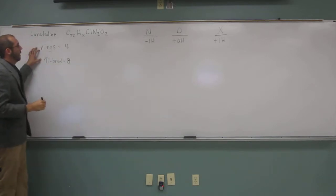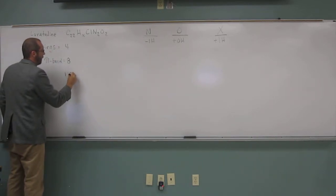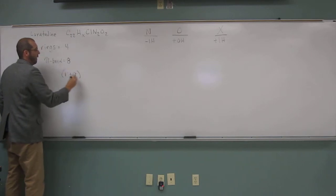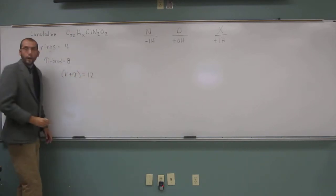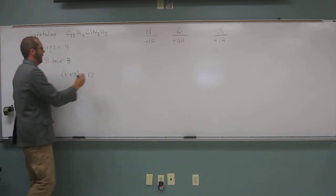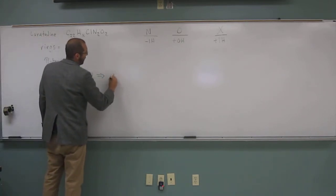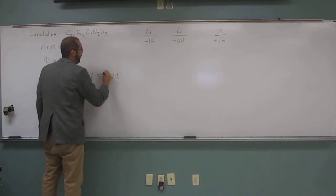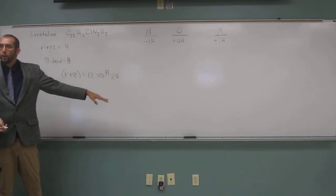So the other thing we know is that the number of rings plus pi bonds, which is 12, right, we're going to double that for the number of hydrogens. So we're going to have 24 hydrogens to start out like that.